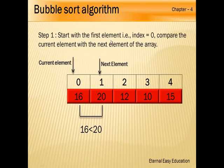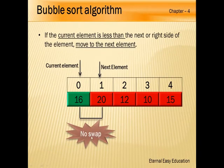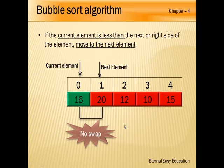Start with the first element at index 0. The index starts at 0, 1, 2, 3, 4, with array values given below. Index 0 is taken as the current element and the next element is at index 1, so we compare 16 and 20. Since 16 is less than 20, no swapping occurs — if the current element is less than the next, we move to the next element.